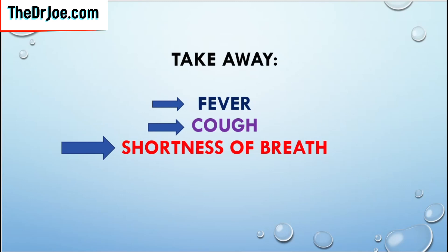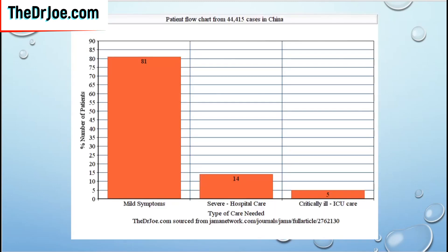Now let's look at the spectrum of how the disease actually behaves in the population. This data comes from a paper looking at 44,415 cases in China. Eighty-one percent of those affected had just mild symptoms — which is actually very good news. However, those who needed hospital care made up 14 percent of this cohort. Five percent needed to be admitted to the intensive care unit, and this is where mortality can actually occur. So for the most part, 81 percent of people get away with just mild symptoms.